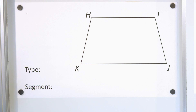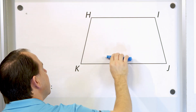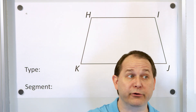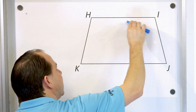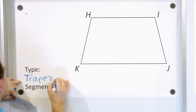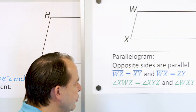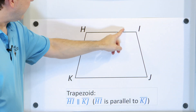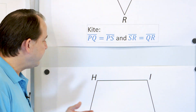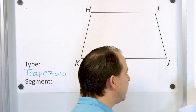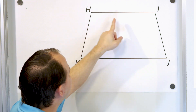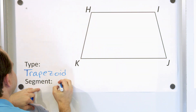Here's our next figure. What type of quadrilateral is this? Well, we have a pair of parallel segments here, but the other sides are not parallel. So this cannot be a parallelogram — for a parallelogram, you have to have both pairs of opposite sides be parallel. But these are not parallel, only one pair of sides is parallel. Because of that, we have a special name: a trapezoid. A trapezoid means HI is parallel to KJ, but the other sides are not. When you only have one pair of sides which are parallel, it's called a trapezoid. What line segment is parallel to KJ? KJ is this one — the one that's parallel to KJ is HI.